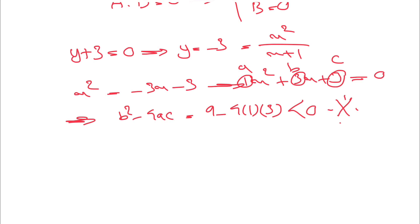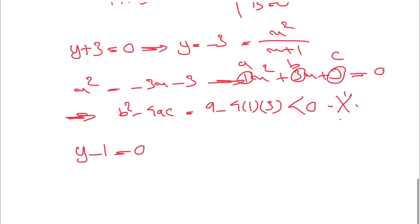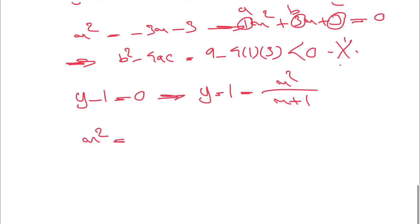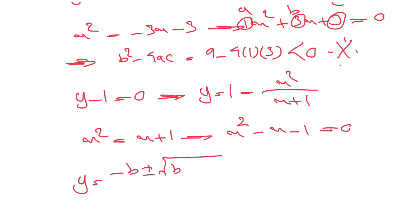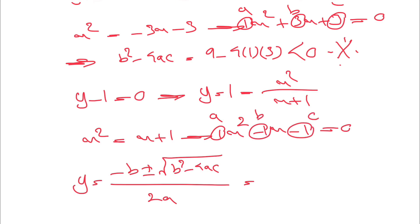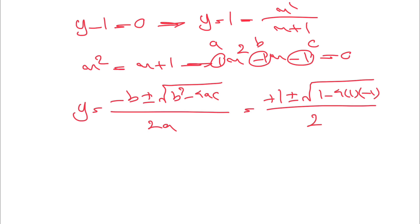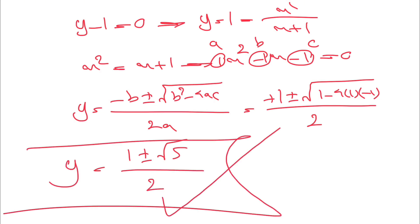Let's go with the second case: y − 1 = 0, so y = 1. Since y = x²/(x+1), we get x² = x + 1, i.e., x² − x − 1 = 0. Using the quadratic formula with a = 1, b = −1, c = −1: x = (1 ± √(1 + 4))/2 = (1 ± √5)/2. And there we go — that's the final answer.